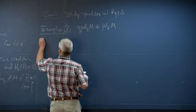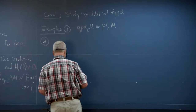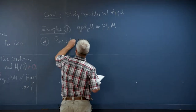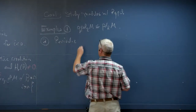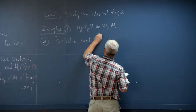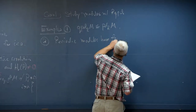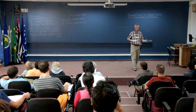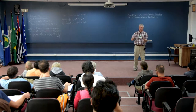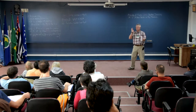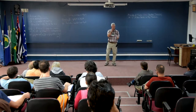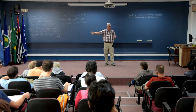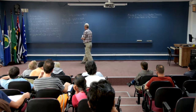The second example: periodic modules have finite quasi-projective dimension. By a periodic module I just mean a module with a periodic projective resolution. If you're a module with a periodic projective resolution, you just chop the complex where the periodicity kicks in, and the kernel at the end is going to be the module M again. So periodic modules have finite quasi-projective dimension.